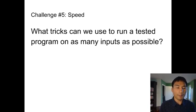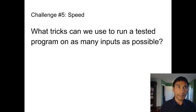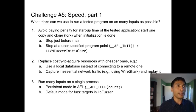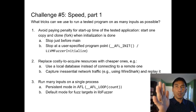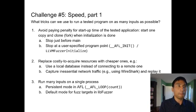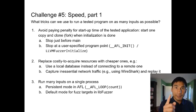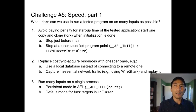Speed is super important. Can we talk about tricks to run a tested program on as many inputs as possible? The more you can run, the more things you are likely to find. Startup is often expensive, so we try to avoid the startup time penalty. You start the program once, let it run, identify the place where startup is done, freeze the program there, and clone it. You don't have to pay the startup time again. You can mark this starting point as AFL_INIT or LLVM_FUZZER_INITIALIZE, and each time you want to run a new input, you use the cloned version.